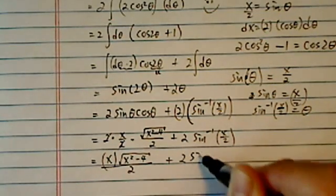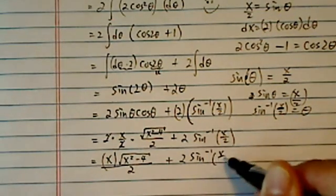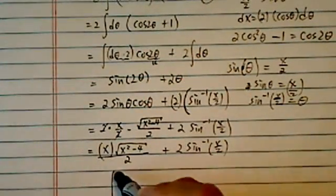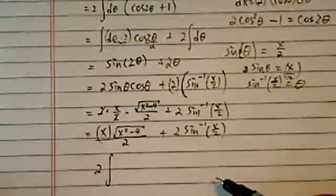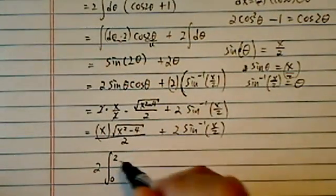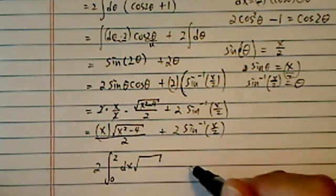Plus twice sine inverse x over 2. Okay, this is my closed form. Now since I was supposed to evaluate, and I did a trick that it's an even function, so basically the integral is equal to 0 to 2. So, dx, this radical root,